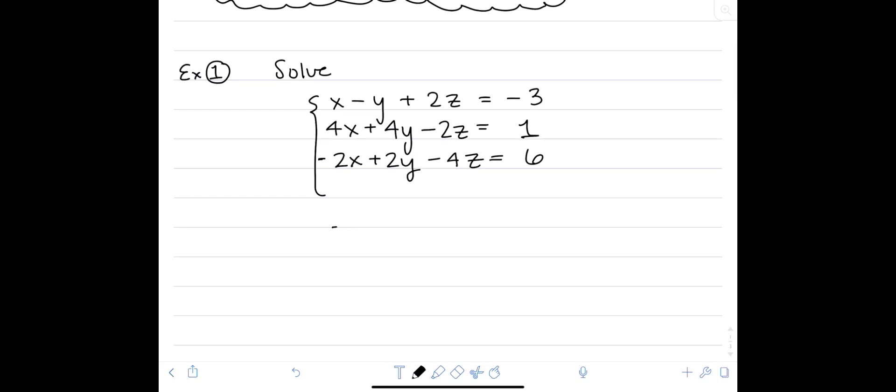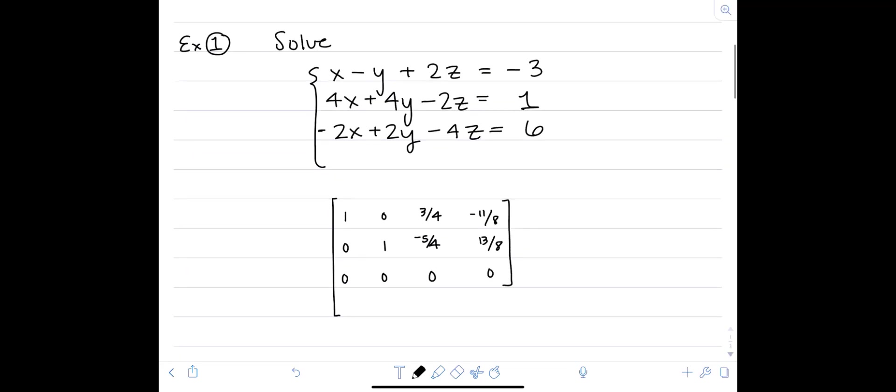Our RREF is 1, 0, 3 quarters, negative 11 over 8, 0, 1, negative 5 fourths, 13 over 8, and the row that gives it away that this has infinite solutions is the last row, which consists of all zeros. What this means is that because we have one row of all zeros, we have one independent variable, and it's in the third row, so that means our independent variable is z.